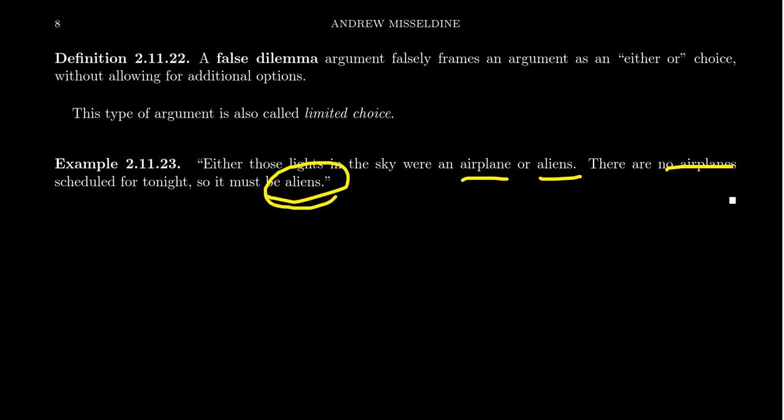Well, could there be other possibilities? Maybe there's airplanes that weren't scheduled flying last night. Maybe it was like a stealth plane or maybe it's a satellite. Maybe it's a comet. There's a lot of things that could be that maybe it wasn't aliens. So the false dilemma means that we didn't consider every possibility as we start ruling them out.